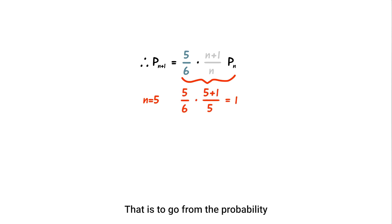That is, to go from the probability for five dice to the probability for six dice, we multiply by one, which means we do nothing. Very interesting.